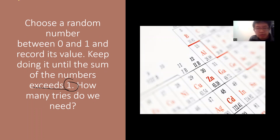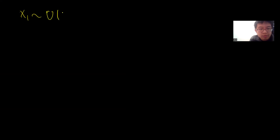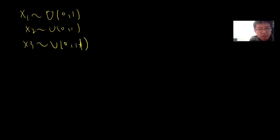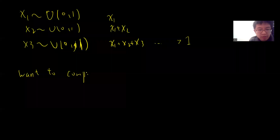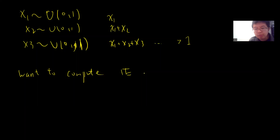So the problem is: you keep drawing — let's say X1 drawn from uniform random on [0,1], then X2, then X3 — and you sum X1, then X1+X2, then X1+X2+X3, until the sum is greater than 1. You use this count as a random variable and you want to compute its expectation value.